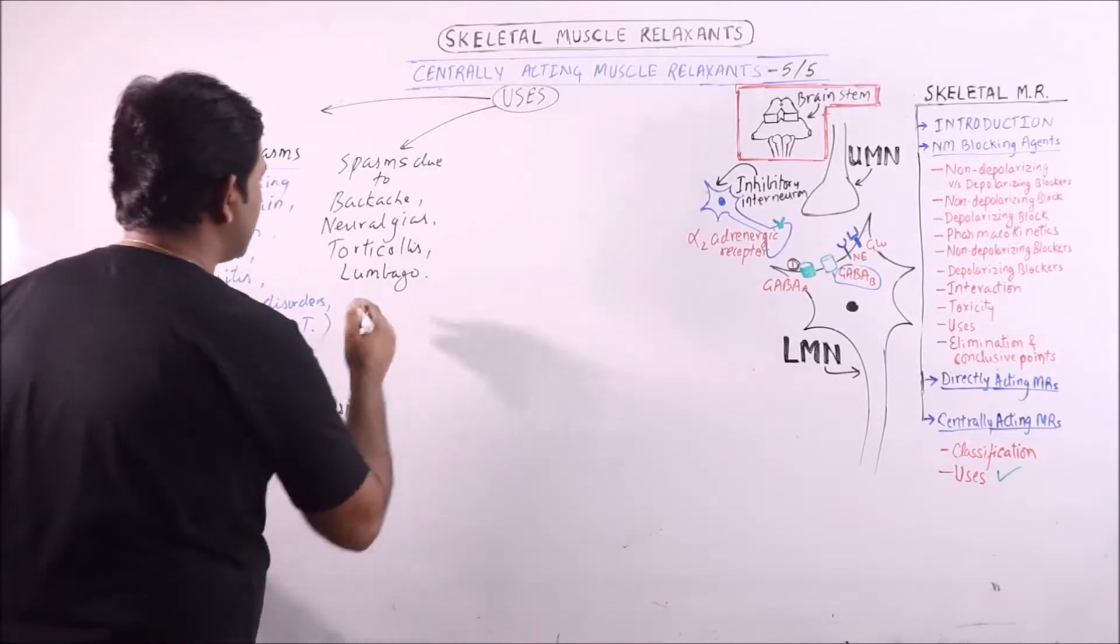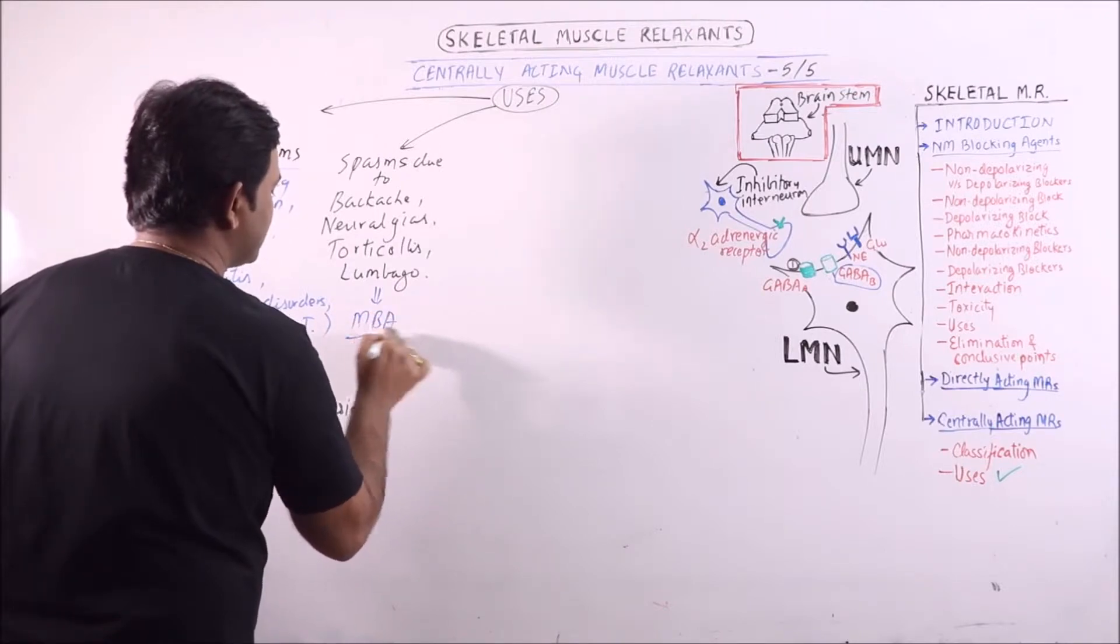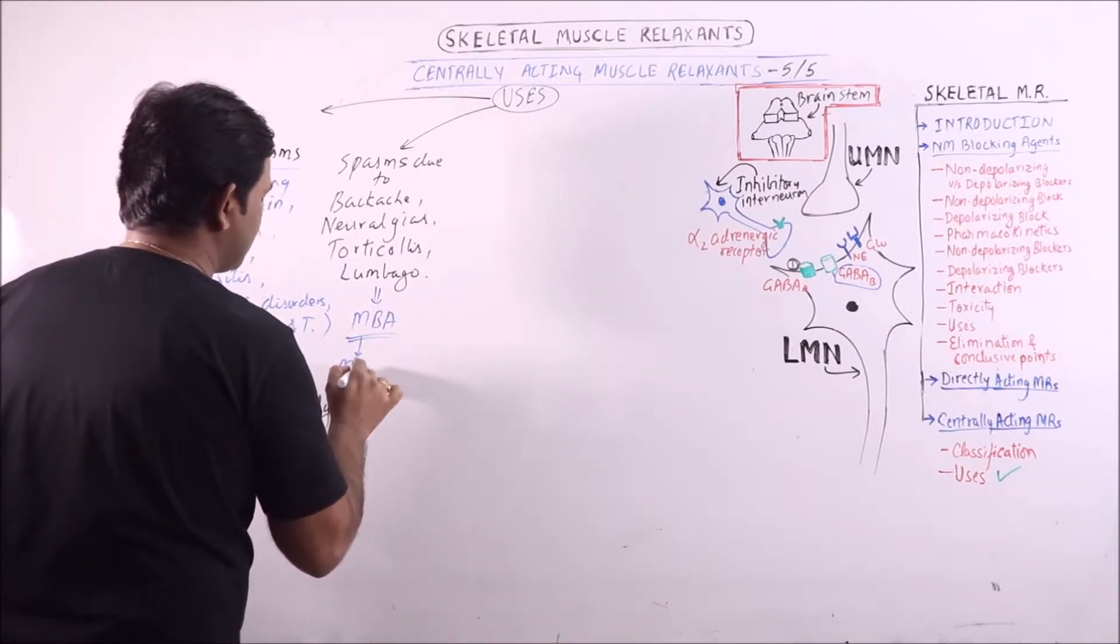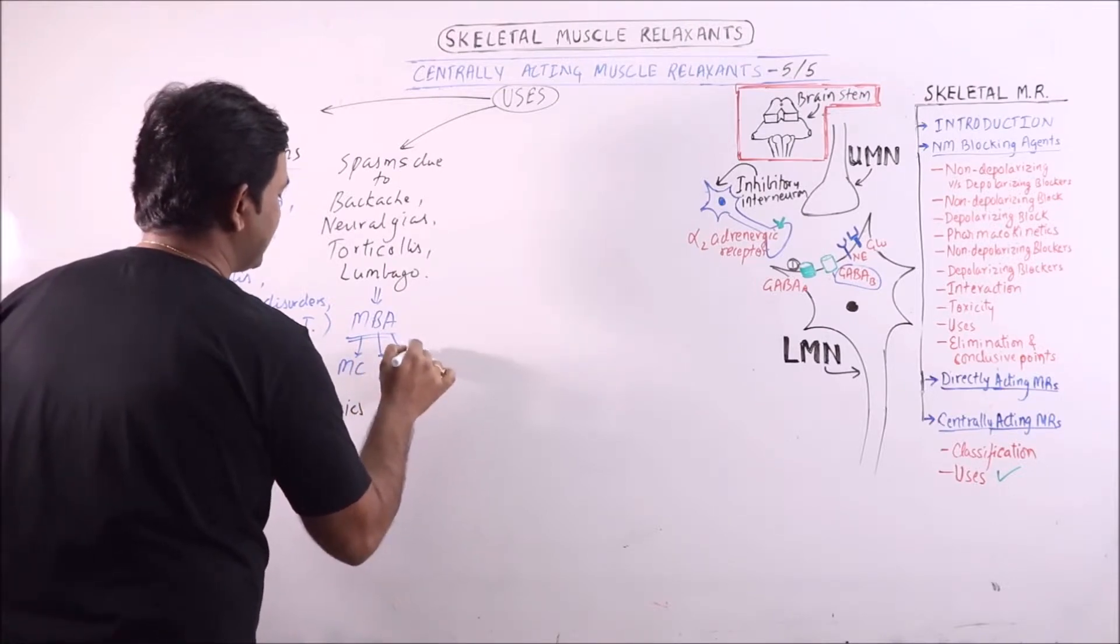In such spasms, again, mefenesin congeners are given, along with benzodiazepines and analgesics.